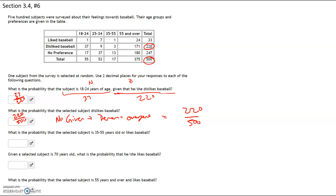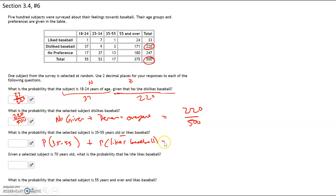The next one says: what is the probability that the selected subject is 35 to 55 years old or likes baseball? The word 'or' is the addition formula, which says we want to find the probability that they're 35 to 55, plus the probability that they like baseball, but then some people get double counted, so we have to subtract off the people who are 35 to 55 and like baseball.